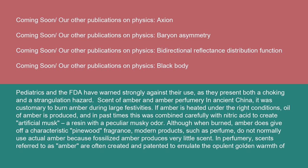Scent of amber and amber perfumery: In ancient China, it was customary to burn amber during large festivities. If amber is heated under the right conditions, oil of amber is produced, and in past times this was combined carefully with nitric acid to create artificial musk, a resin with a peculiar musky odor. Although when burned, amber does give off a characteristic pinewood fragrance. Modern products such as perfume do not normally use actual amber because fossilized amber produces very little scent. In perfumery, scents referred to as amber are often created and patented to emulate the opulent golden warmth of the fossil.